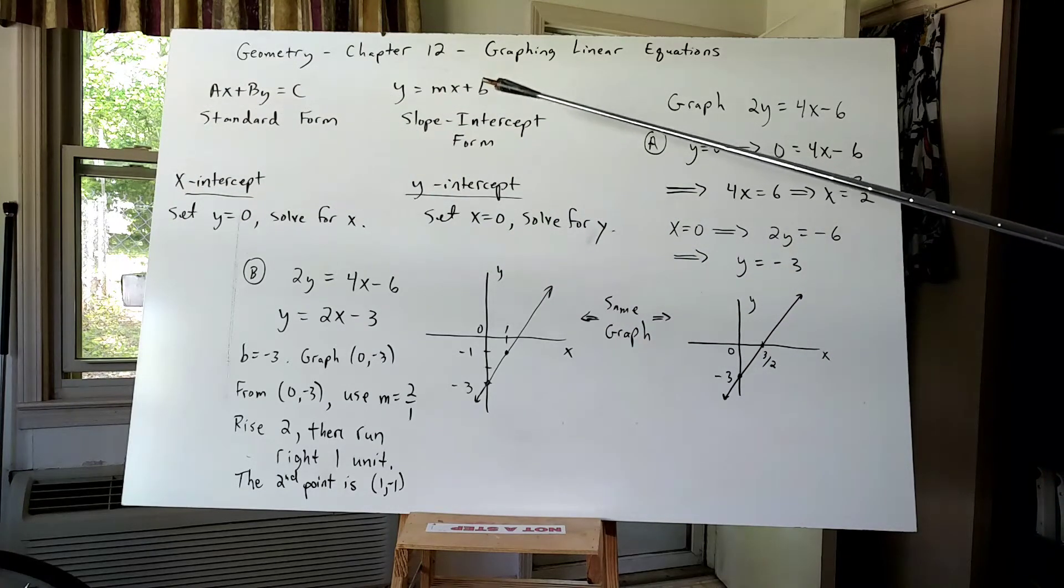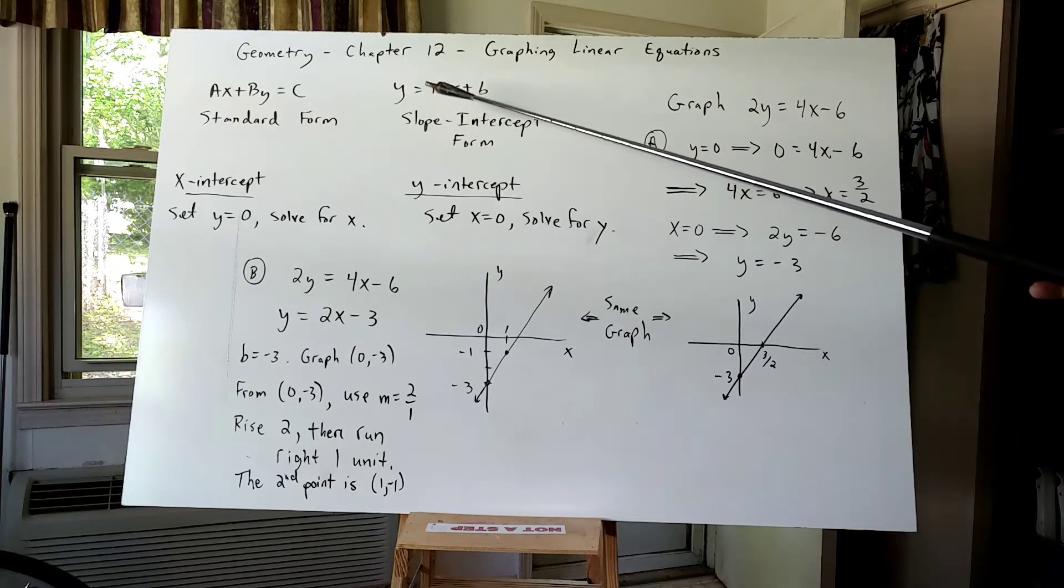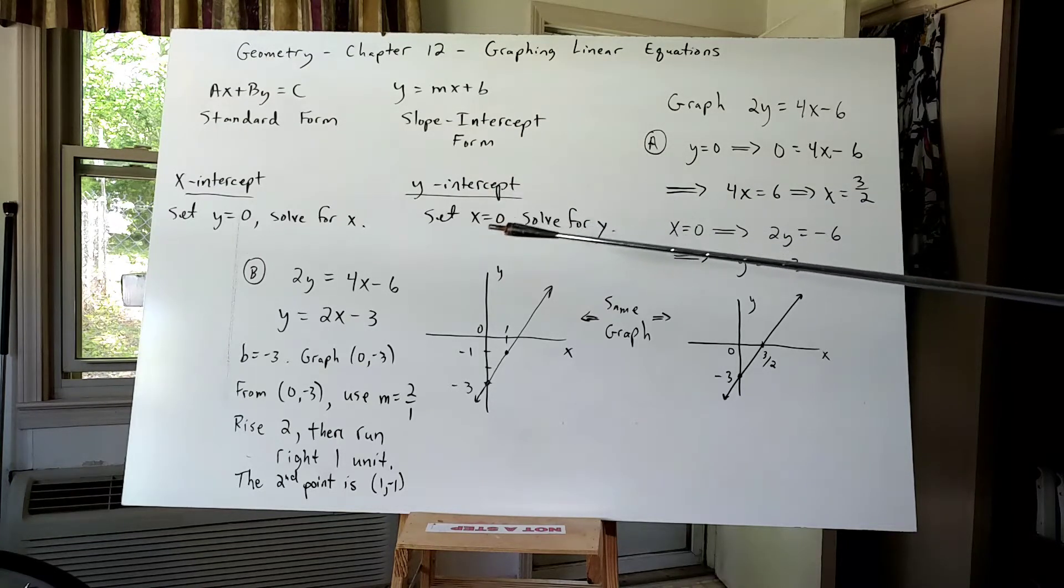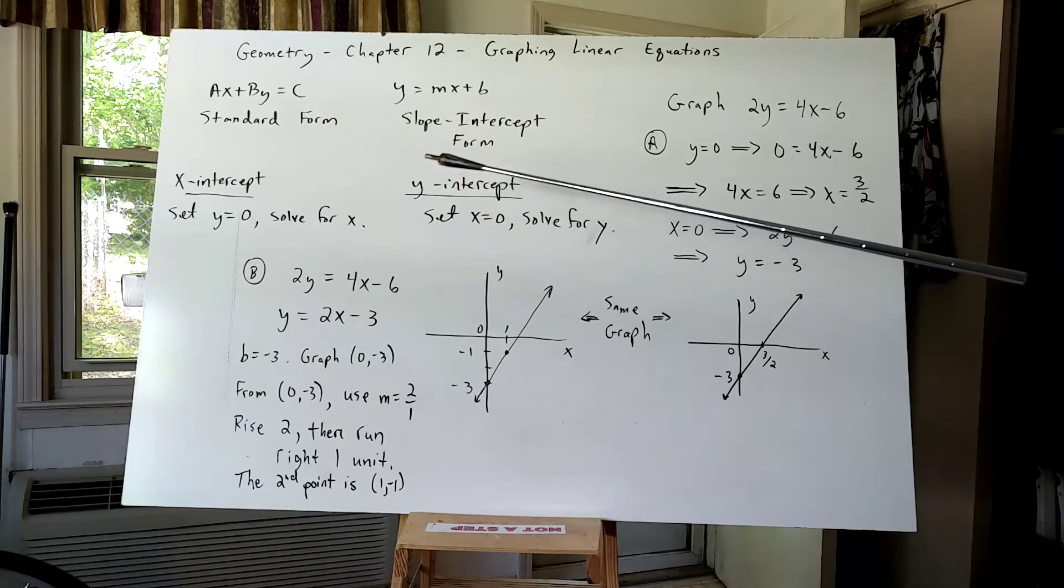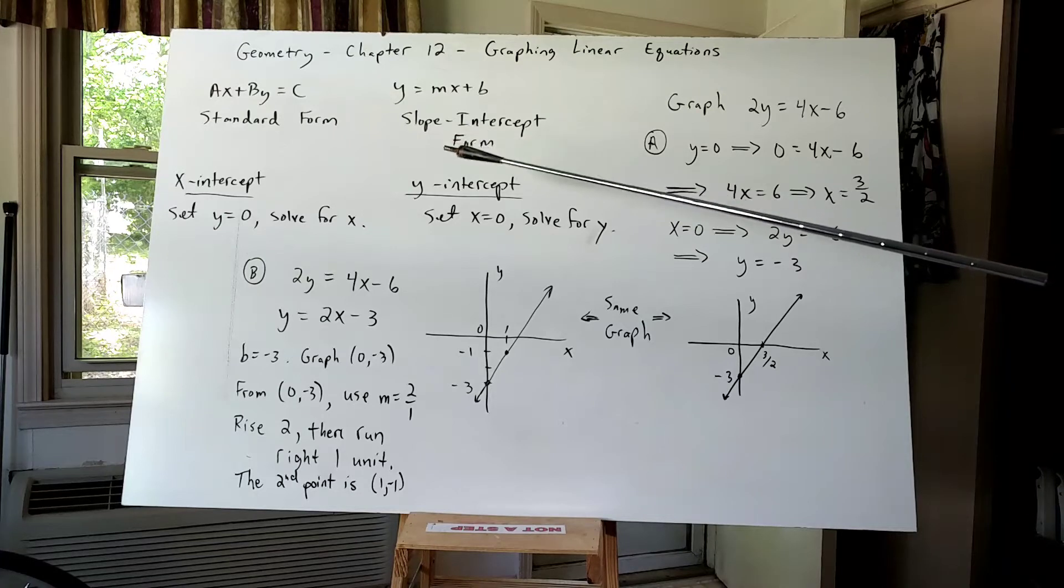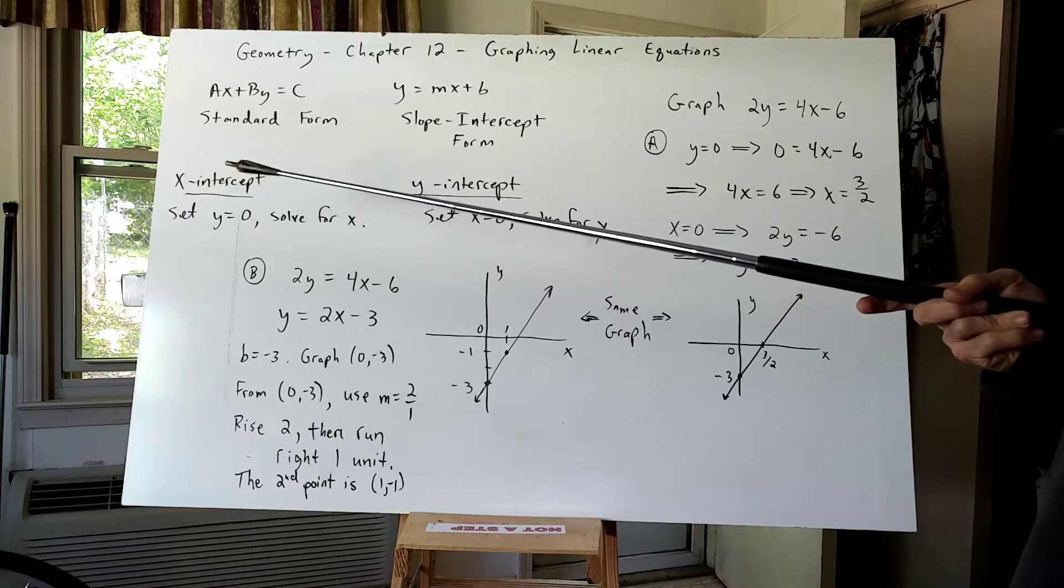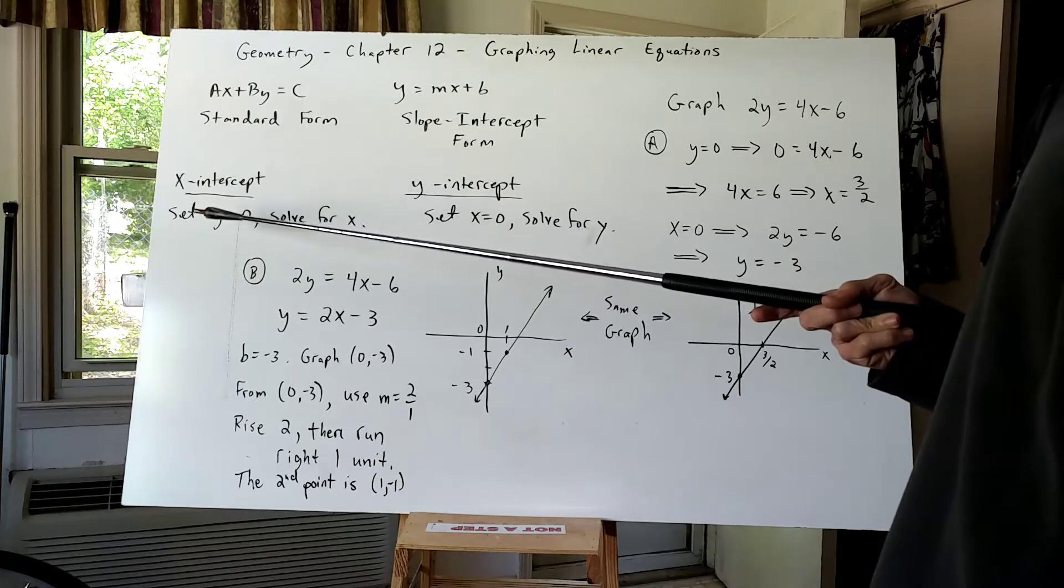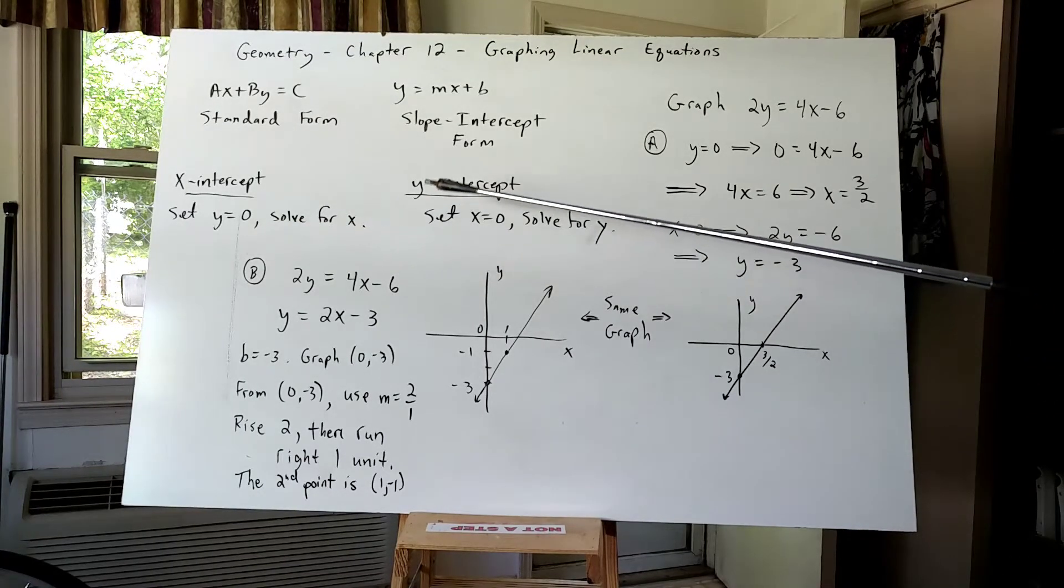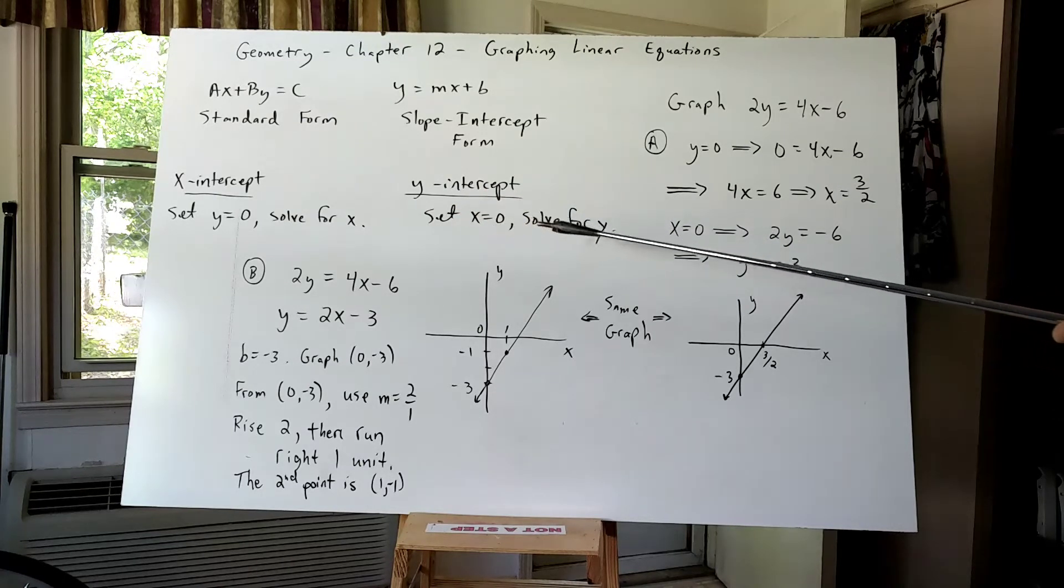The other form that we will graph from is called slope intercept form and it looks like Y equals MX plus B. I'm going to give one example and graph it from slope intercept form as well as using X and Y intercepts. To find an X intercept, you set Y equal to zero and solve for X. To find the Y intercept, you set X equal to zero and solve for Y.